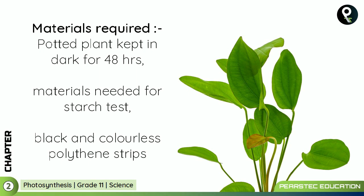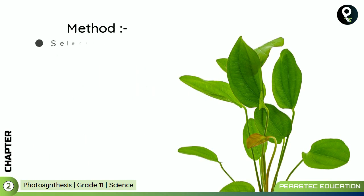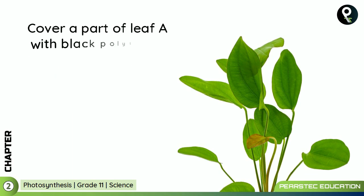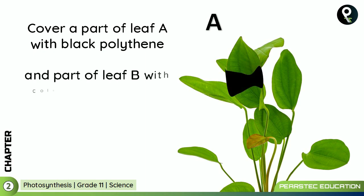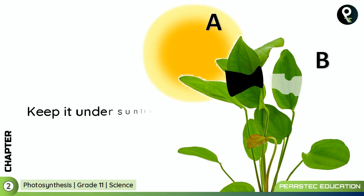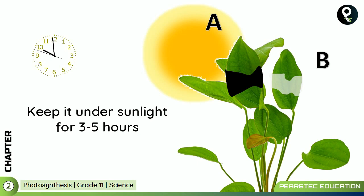Method: Select two leaves almost similar to each other — label them A and B. The plant was already kept 48 hours in a dark place. Cover a part of leaf A with the black polythene and a part of leaf B with the colorless polythene. One part is covered with black and the other leaf B is covered with the transparent polythene. Then keep the plant under sunlight for three to five hours.